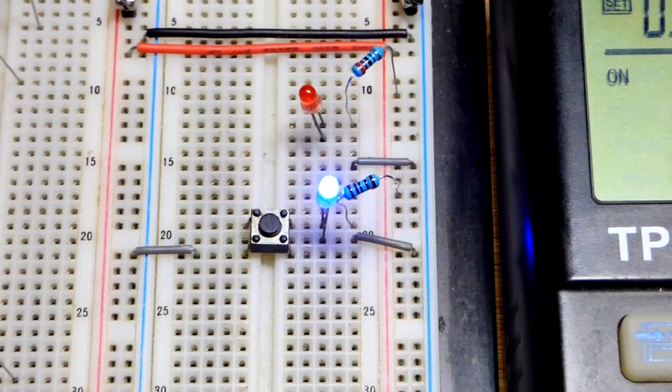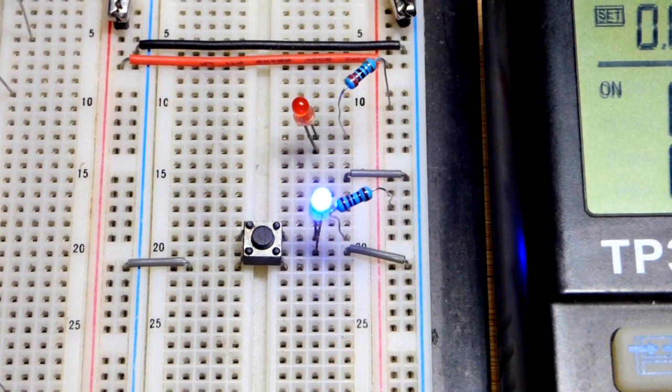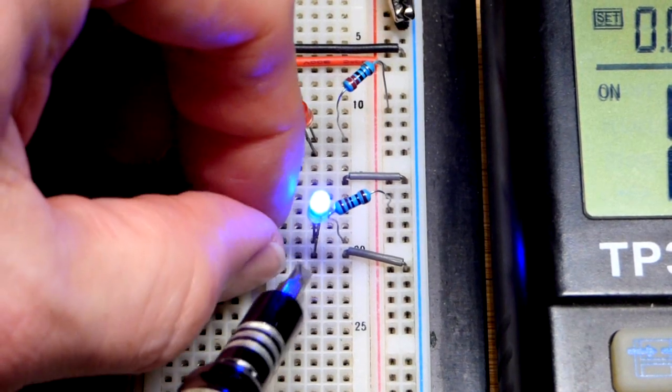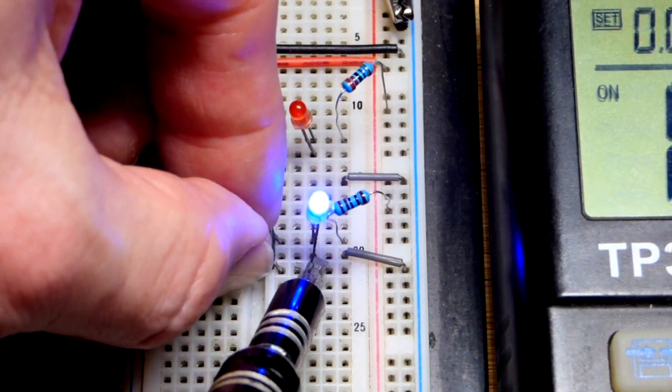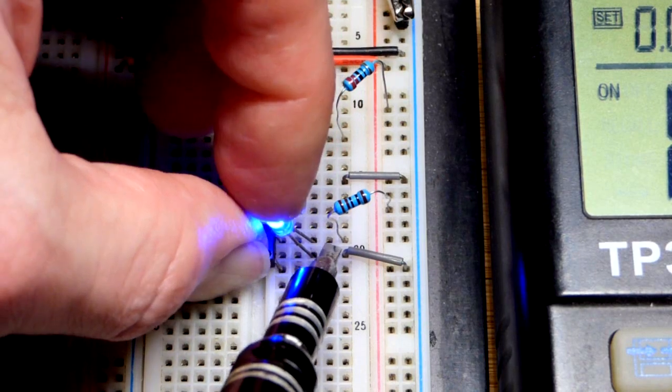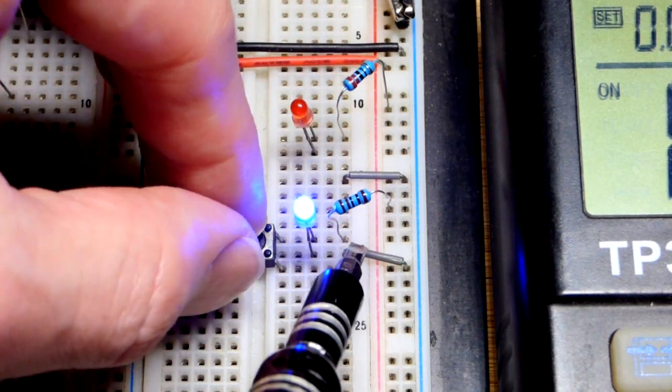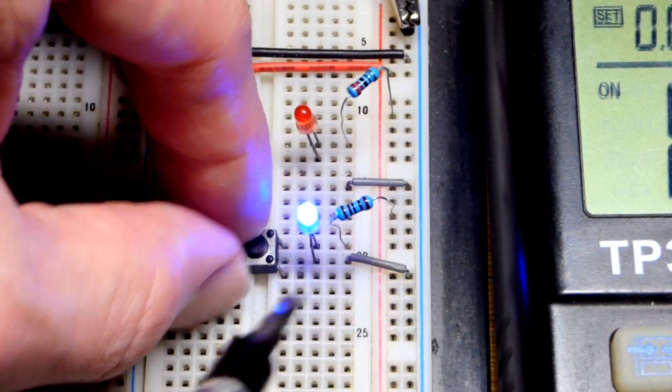So in the middle of the switch that's not connected to anything, you can see the cathode goes to ground, the anode up there which is connected to the top of the switch goes to the 1000 ohm resistor right there.